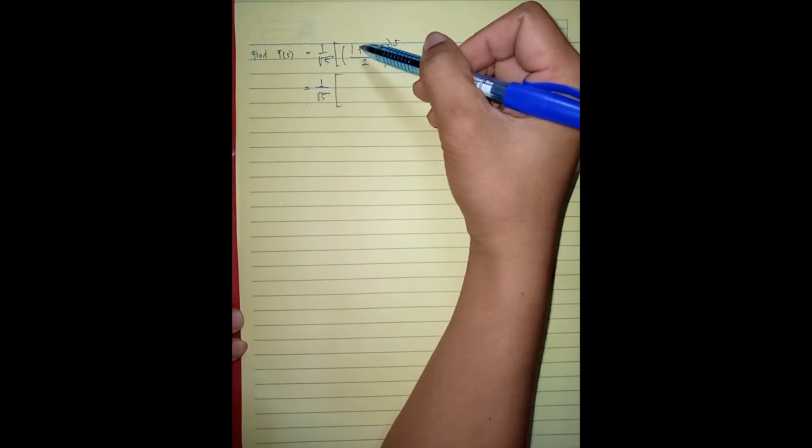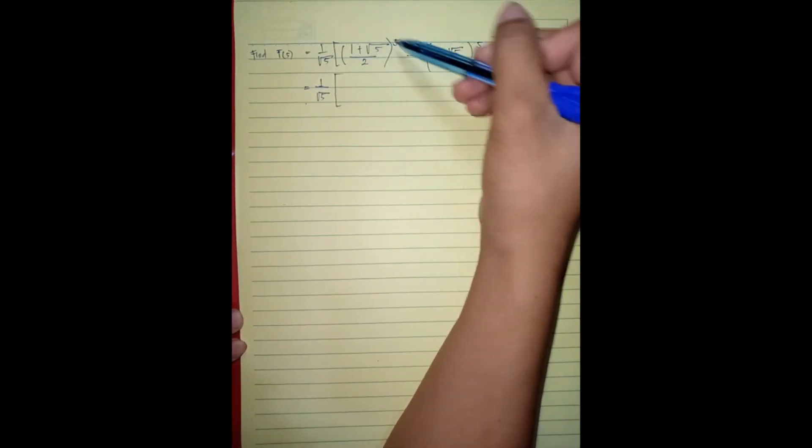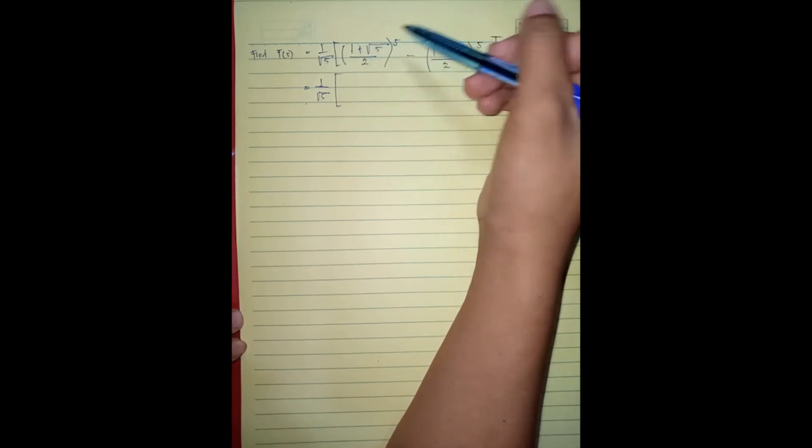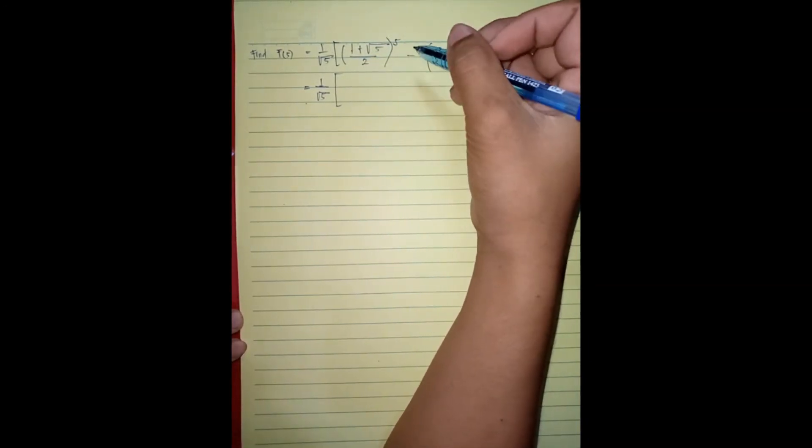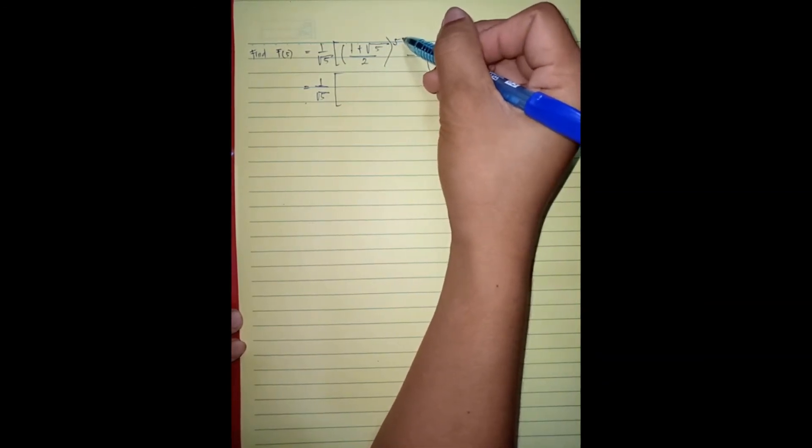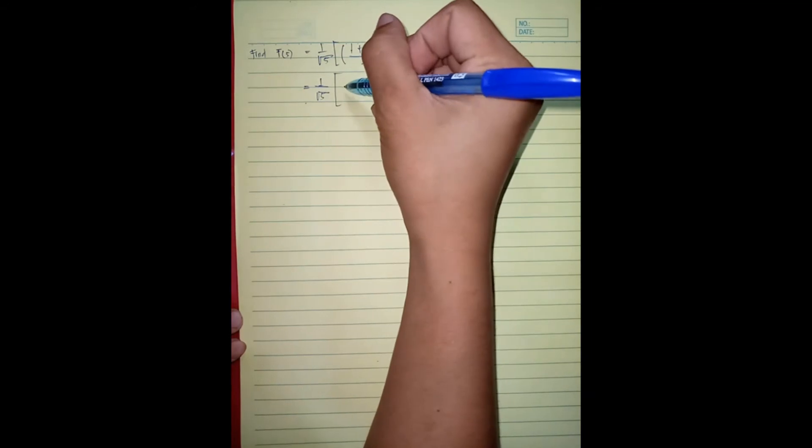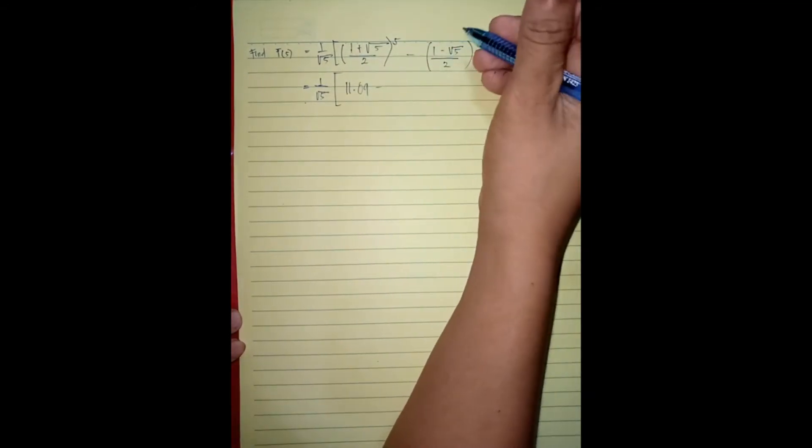So i-simplify muna natin. I-plus or ano natin, so one plus square root of five divided by two, yung answer nun i-raise natin to five, then nakakuha tayo ng 11.09. Same dito sa kabila.